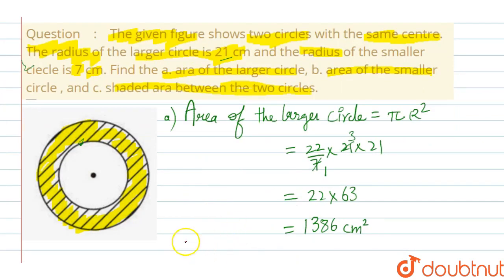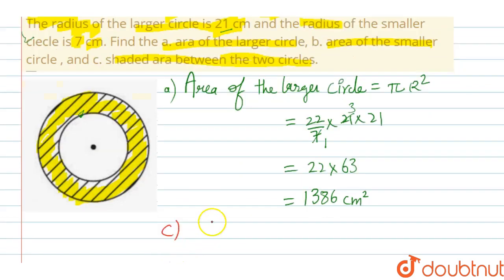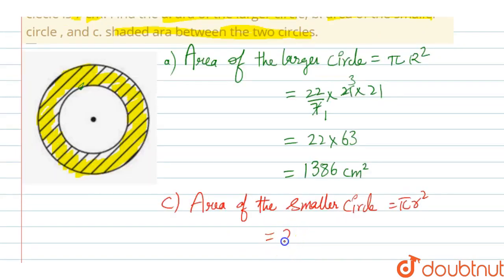Then the second part is the area of the smaller circle. So the area of the smaller circle will be equals to—we need to change the radius only. So area of the smaller circle is equals to pi r square and 7 is the radius. So 22 by 7 into 7 into 7,